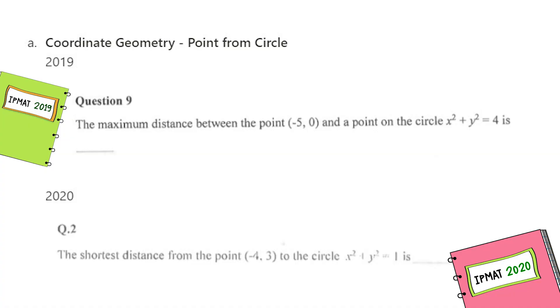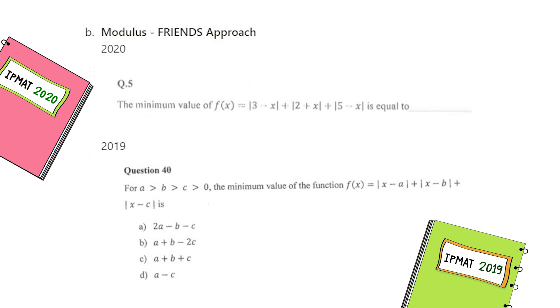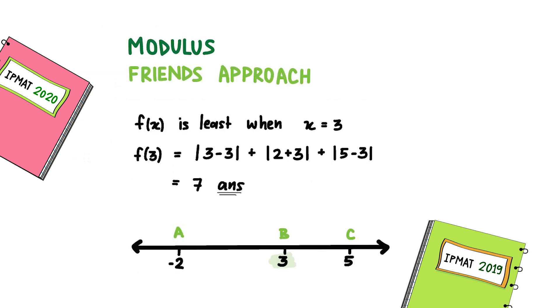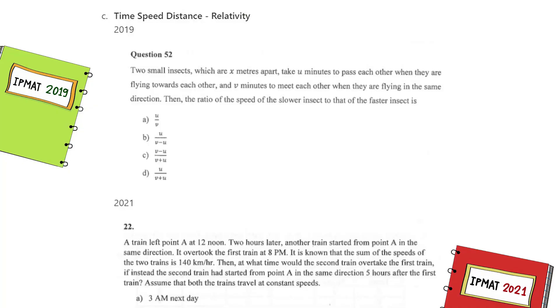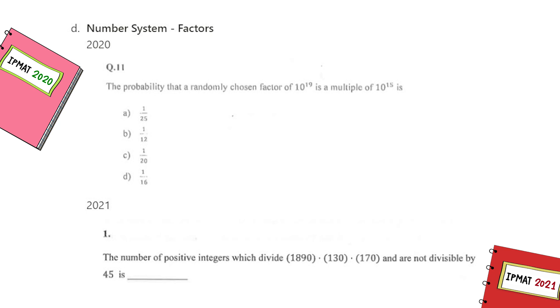Over here we had a question from coordinate geometry — a point from a circle. In 2019 and 2020 you get similar concepts. If you are able to solve one of them, you'll be able to solve the second one too, because it utilizes similar concepts. Next we have modulus, which can be easily solved using the friend subsearch method — that was available in the 2020 paper and even in the 2019 paper. We also had a question from time, speed, and distance on relativity, which came twice — in 2019 and in 2021. And in 2020 there was a number systems question mixed with probability. So if you do not know the basics of probability, you would not be able to solve the question even if you knew number systems. Please do not ignore anything — learn it, do not skip it, revise it.